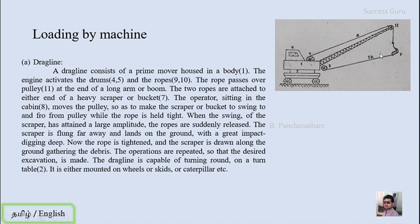The operator moves the rope, which moves the pulley to the desired position. When the swing of the scraper has attained a larger amplitude, the rope is suddenly released, flinging the scraper far away. It lands on the ground with a greater impact, digging deep. The rope is then tightened and the scraper is drawn along the ground, gathering the debris back towards the machine. These operations are repeated so that the desirable excavation is made.